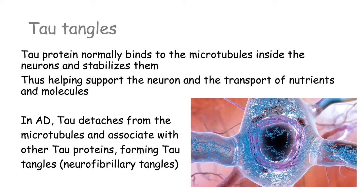Next, we have the tau tangles. Tau protein is also a normal constituent of neurons and will normally bind to the microtubules inside the neurons to help stabilize them, supporting the neuron and the transport of nutrients and molecules — including neurotransmitters — throughout the neuron. In Alzheimer's disease, the tau protein detaches from the microtubules and associates with other tau proteins that have also detached, forming tau tangles, also called neurofibrillary tangles.